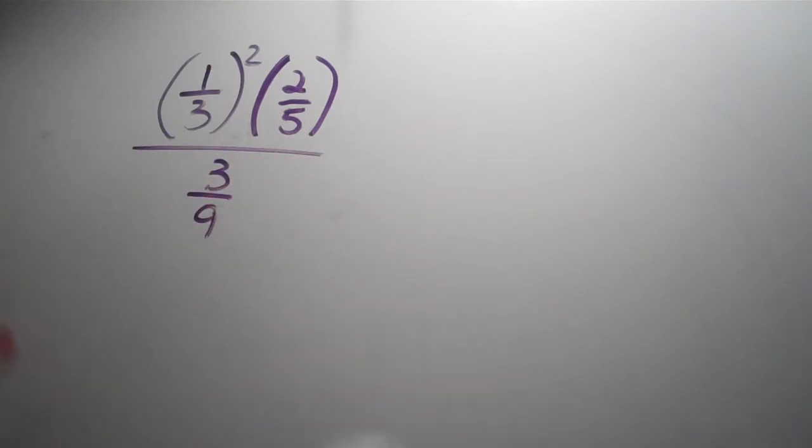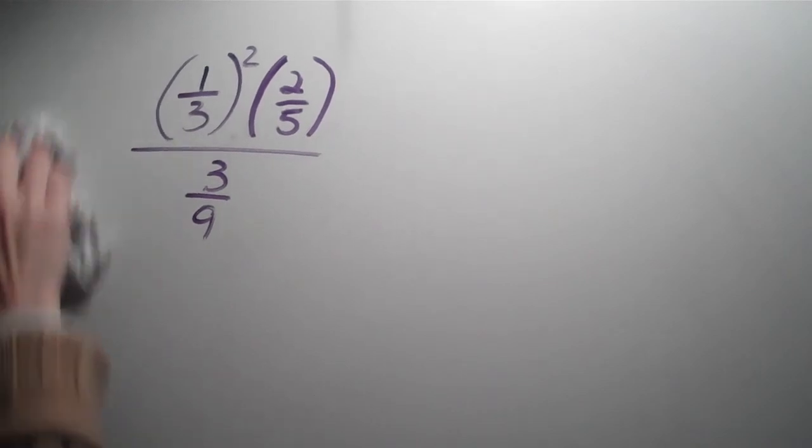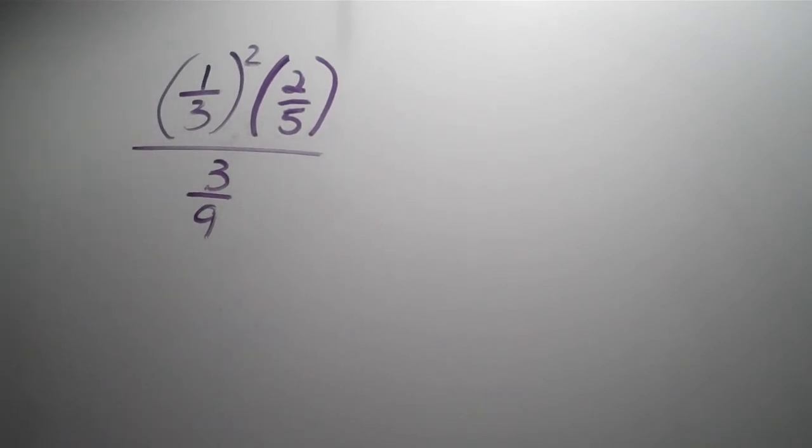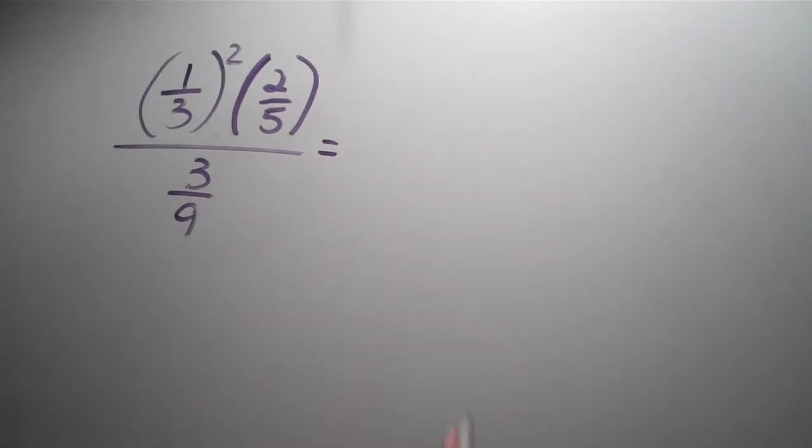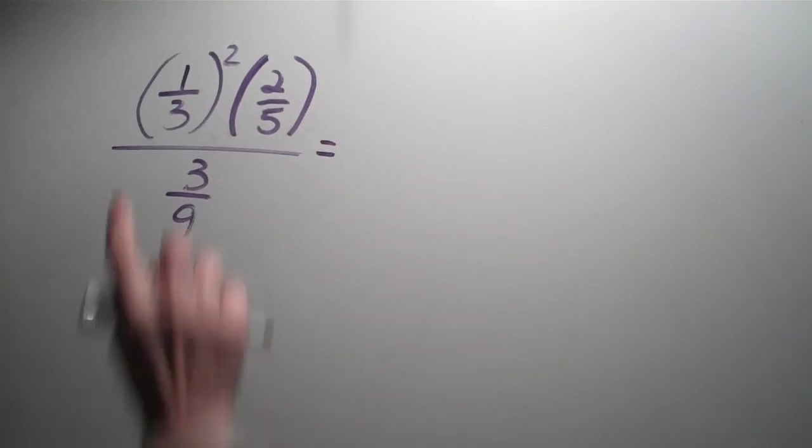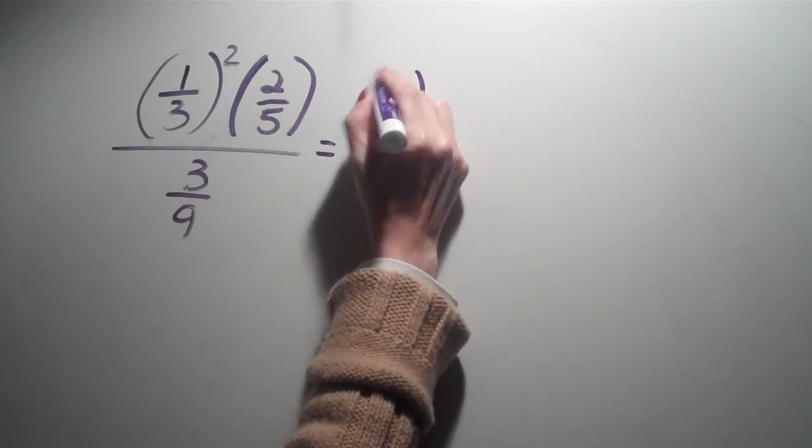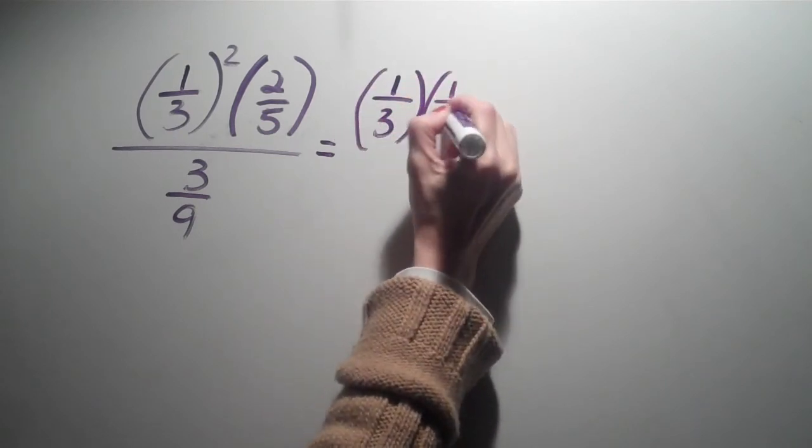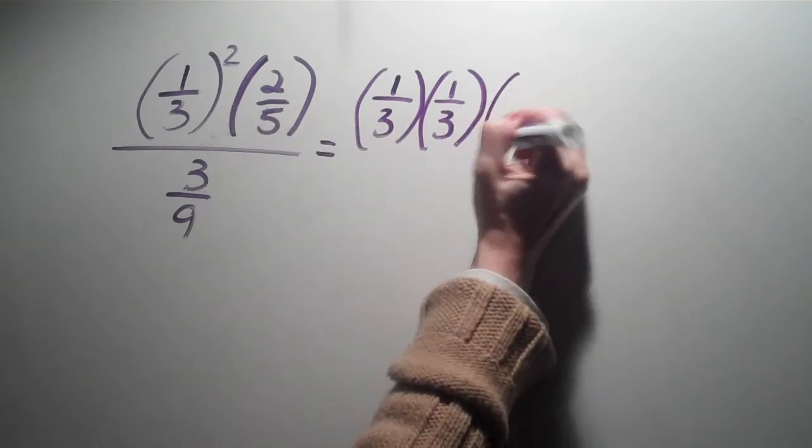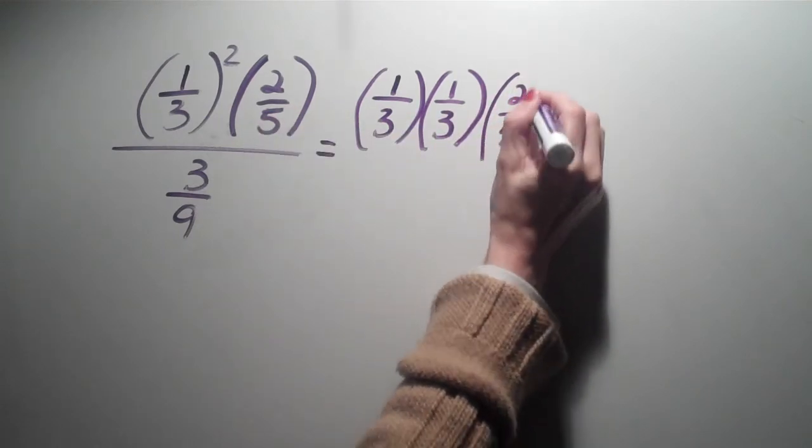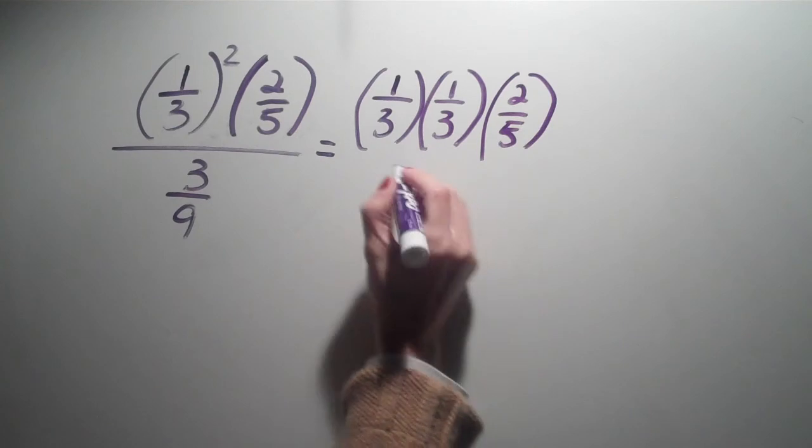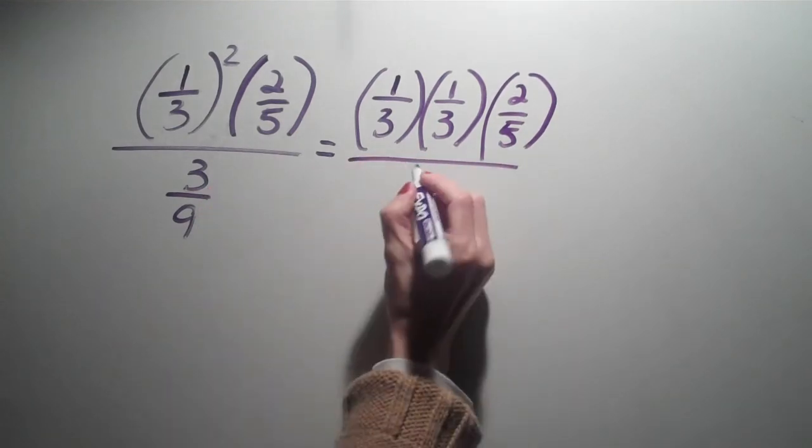Times 2 fifths divided by 3 over 9. Okay, so there's a few steps that have to happen over here. Okay, so we have 1 over 3 squared. Well, what does that mean? The most important thing is to take care of that, right? Because we have exponents first.